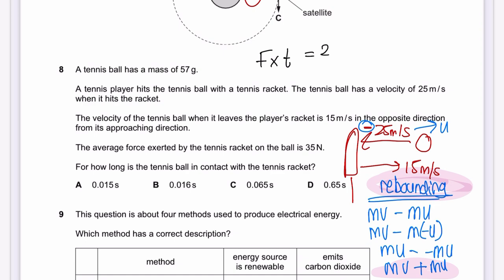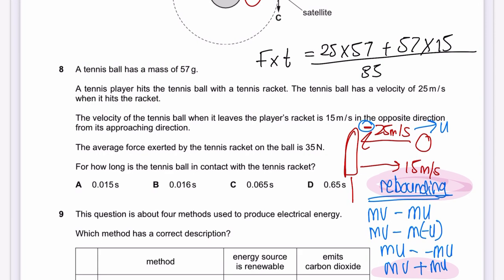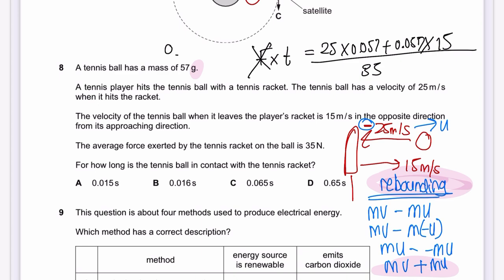So we calculate: F × t = 0.057 × 25 + 0.057 × 15. Dividing by force 35 N gives the time. Remember to convert 57 grams to 0.057 kg — this is crucial. The answer for question 8 is C: 0.065 seconds.